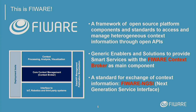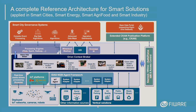Southbound are the interfaces to get access to the data, where we are using LoRaWAN and other technologies. And northbound we have functionalities to process, analyze, and visualize data. In a more detailed architecture — in this case for smart cities, but also for smart agri-food, smart energy, and smart industry and Industry 4.0 — you see again the context broker in the center, and southbound this NGSI-based interface.